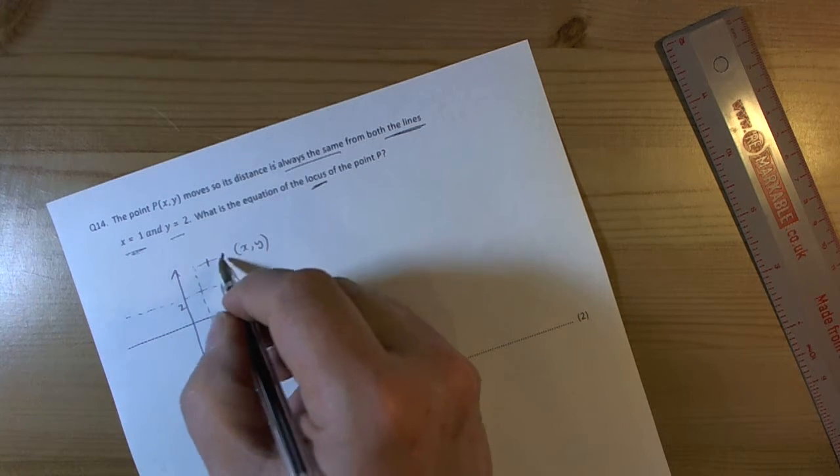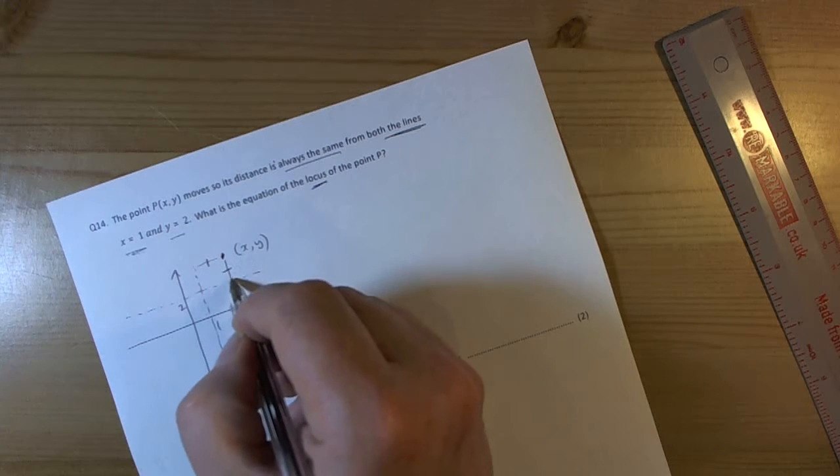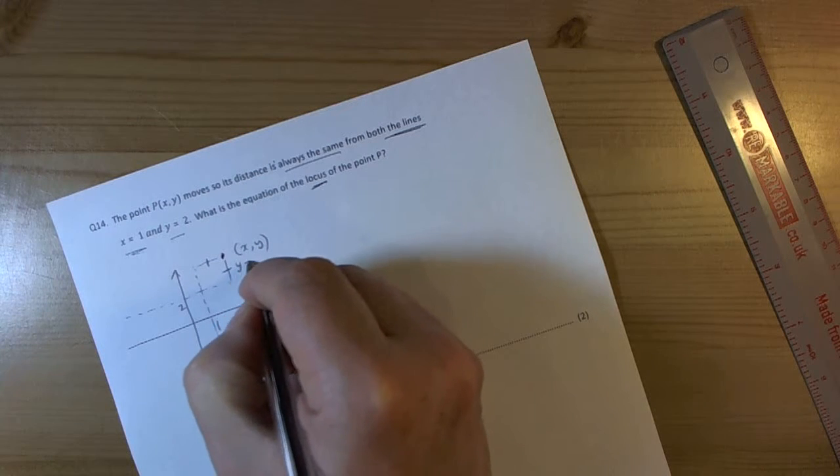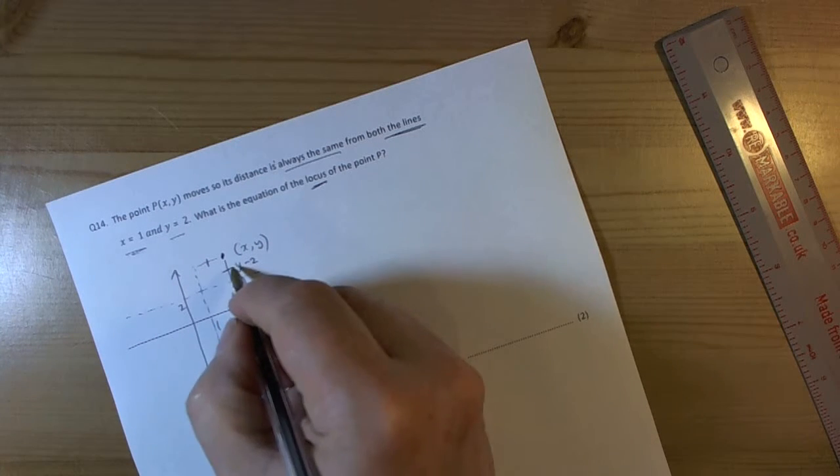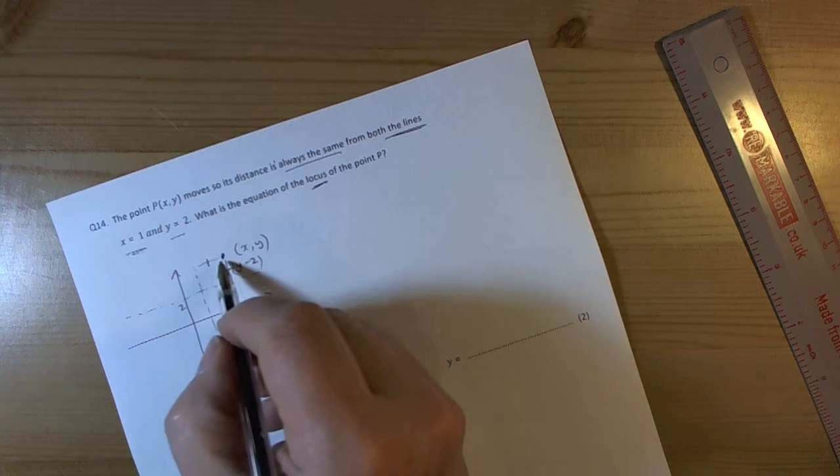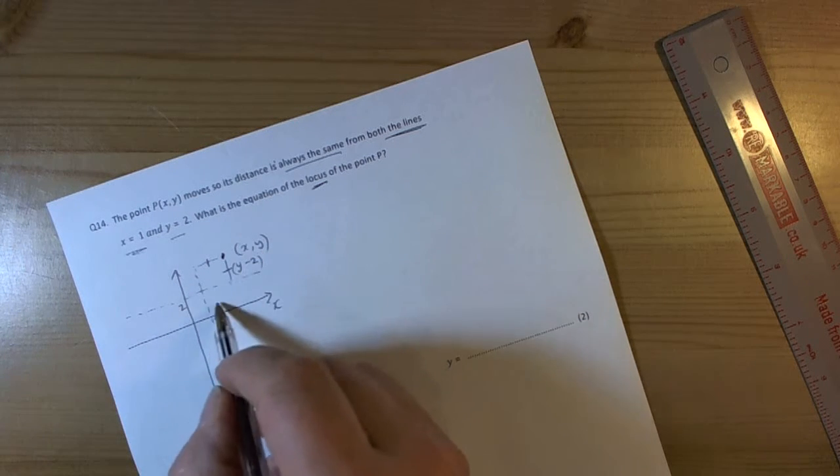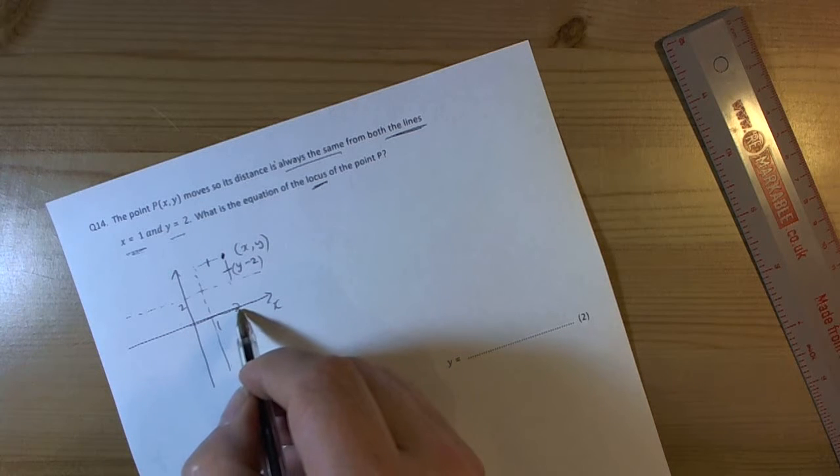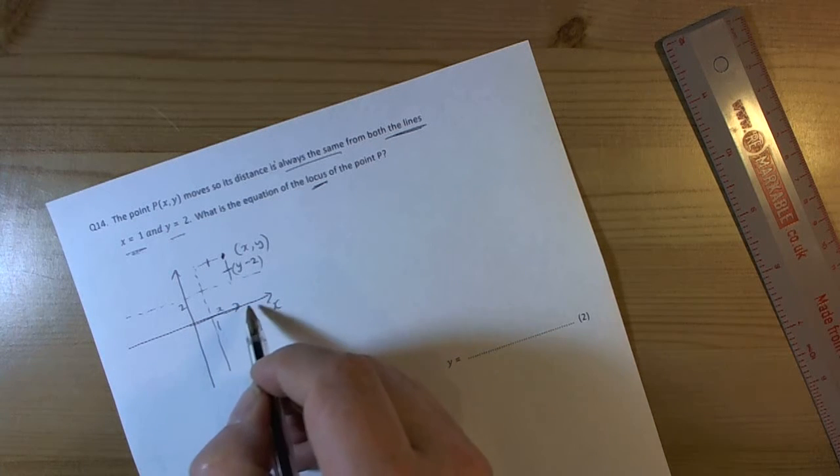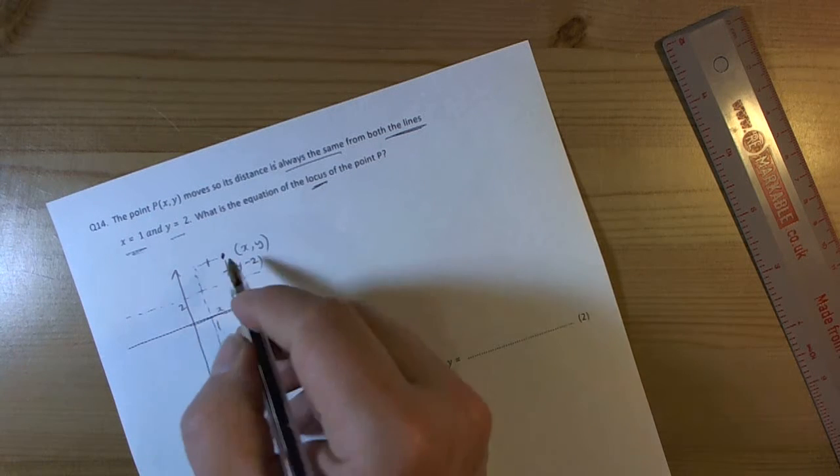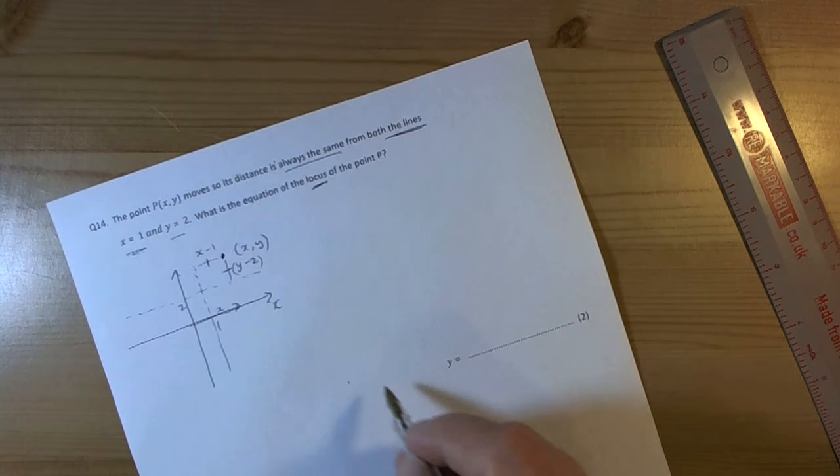So just work in general terms. The distance from this point to the line y equals 2 is the y coordinate, take away 2. The distance of this point from the line x equals 1, well this coordinate is x along, so we're going along here a distance of x, well the gap there must be the x value minus 1. So this has a distance of x minus 1.